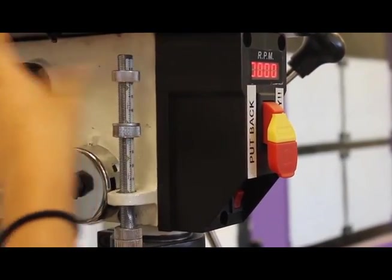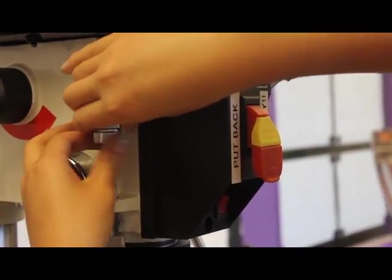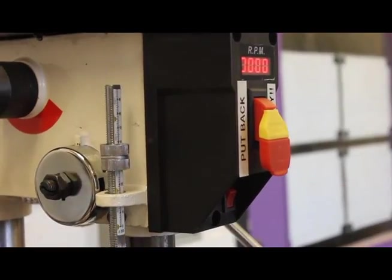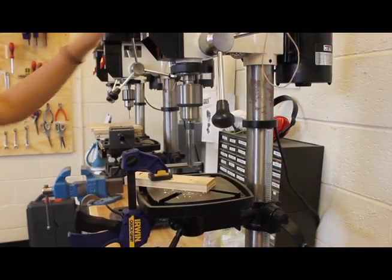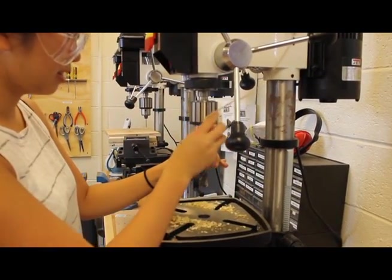If you are not drilling a through hole, you can use the depth stop to drill a hole to your specified depth. When you're done, remove the drill bit. Never touch a spinning drill bit or collet. Wait until it has come to a complete stop.